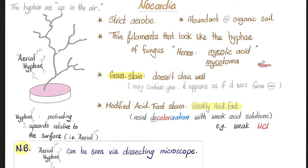Gram stain is not very helpful, but the modified acid-fast stain is very helpful. Add a weak HCl solution to the bacteria — will the bacteria be decolorized? The answer is no, because this is acid-fast, i.e., resistant to the acid, resisting decolorization after you add the acid. Here's something unique to Nocardia: being weakly acid-fast plus having aerial hyphae — thin filaments protruding upward above the surface of the colonies. Whenever you see aerial hyphae and a weakly acid-fast organism, you can bet this is Nocardia.